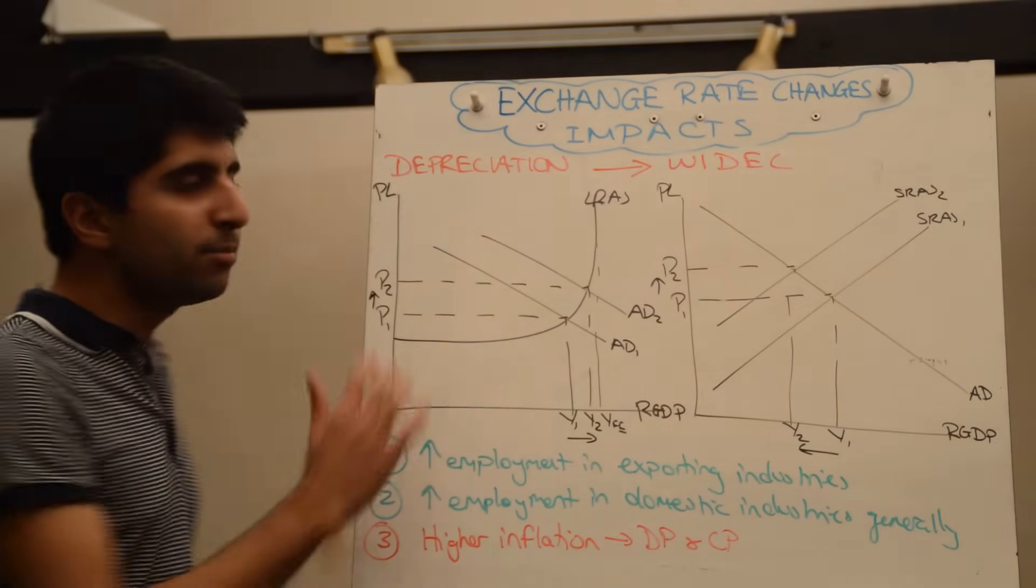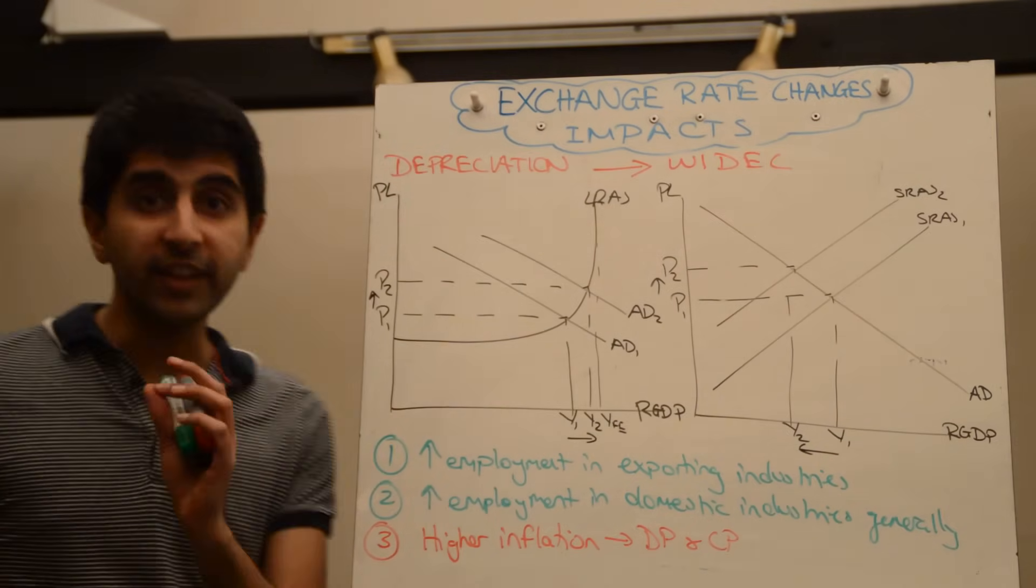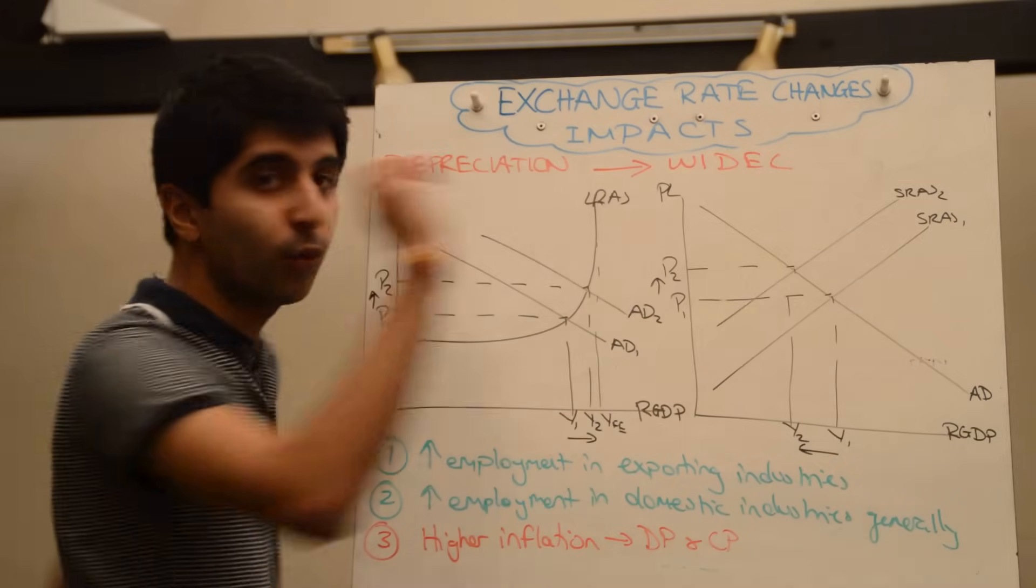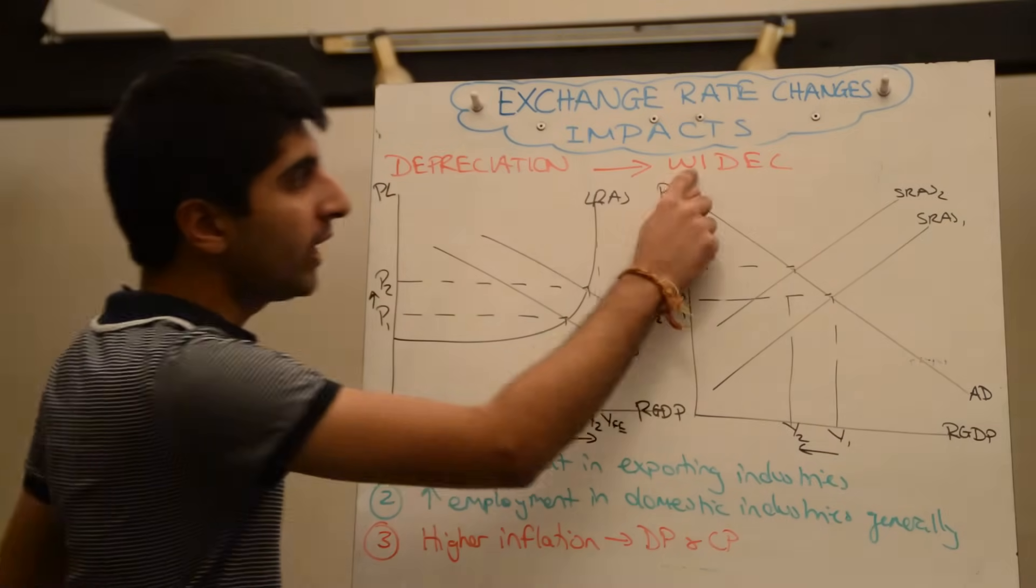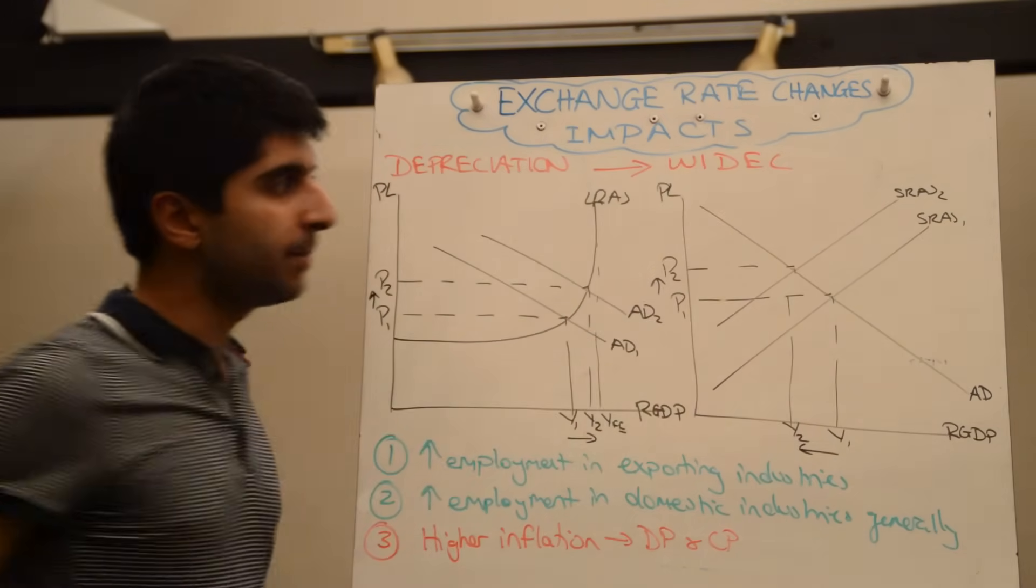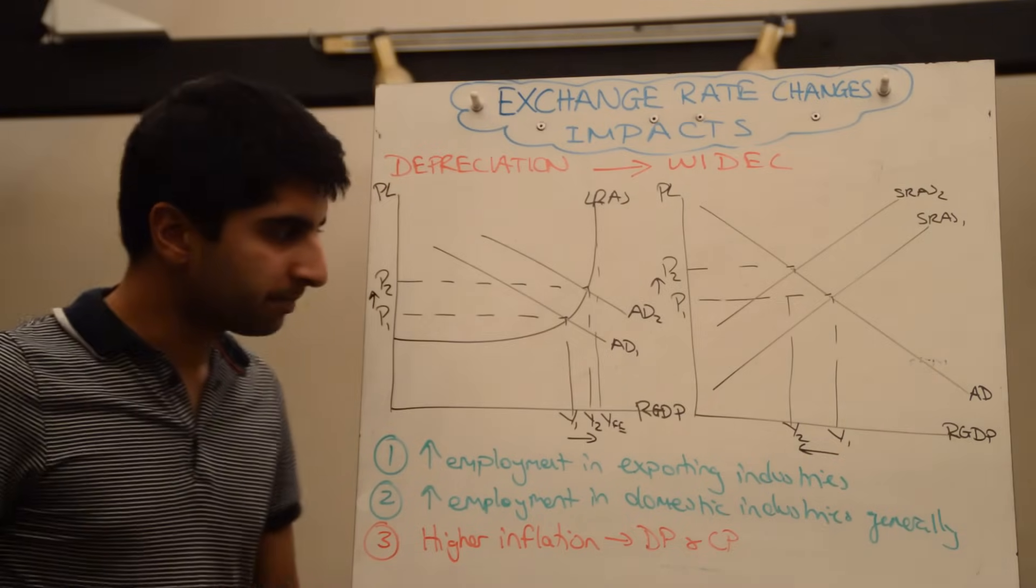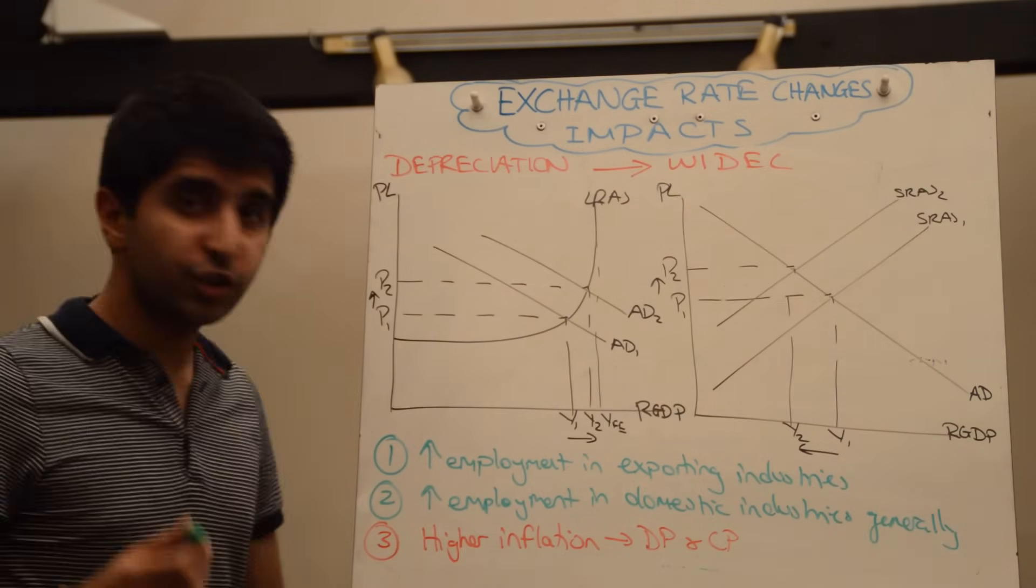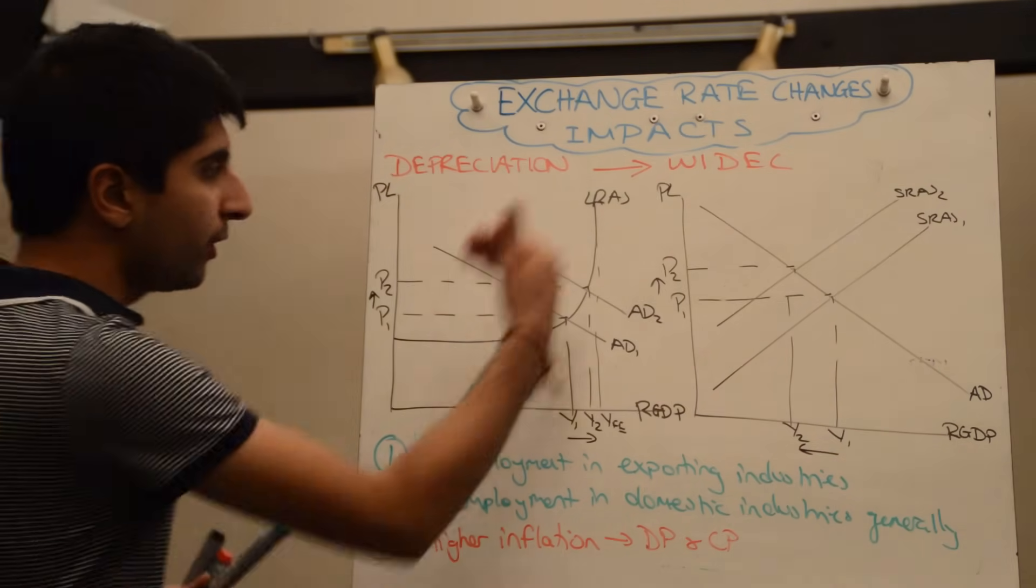Let's now look at the depreciation of the exchange rate. When we think depreciation we just need to think WIDEC. WIDEC: weak currency, imports expensive, imports dear, exports cheaper. Right, in theory that should well increase aggregate demand.